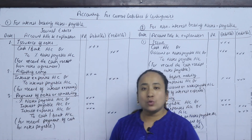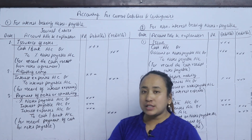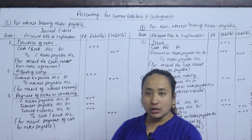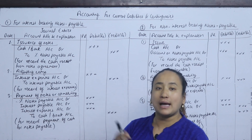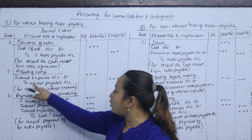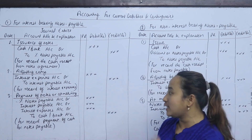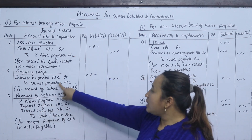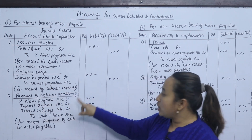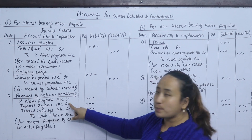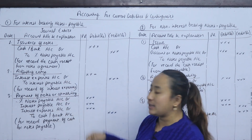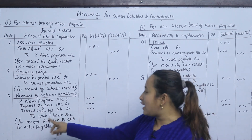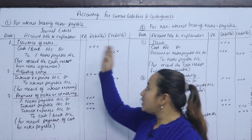Suppose a notes payable was issued 10 months ago and an adjusting entry for interest was made 6 months ago. For the remaining period — say 4 months — interest expenses account is debited and interest payable is credited. At final payment, both notes payable and interest payable are debited, and cash is credited.